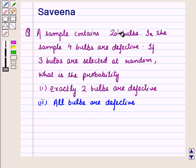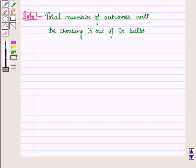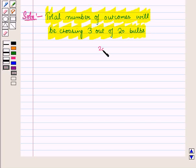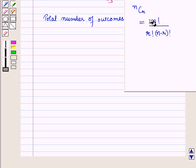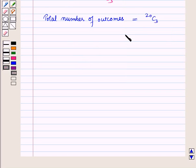Now here we are given a sample of 20 bulbs and out of these 3 bulbs are selected. So the total number of outcomes will be choosing 3 out of 20 bulbs, that is 20C3, which means the number of combinations of 20 bulbs taken 3 at a time. So total number of outcomes is equal to 20C3. Now we know that NCR is equal to N factorial upon R factorial into N minus R whole factorial. So 20C3 will be equal to 20 factorial upon 3 factorial into 20 minus 3 whole factorial.